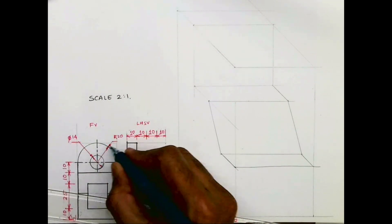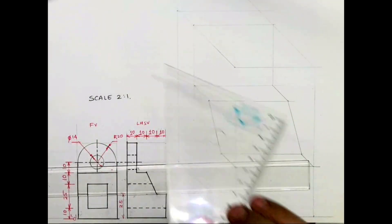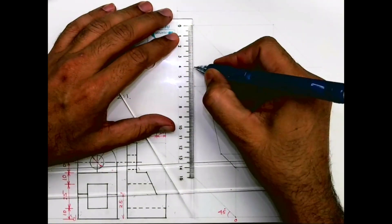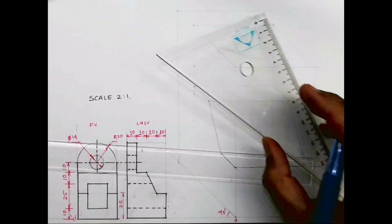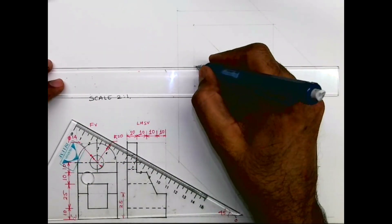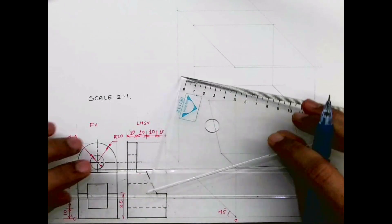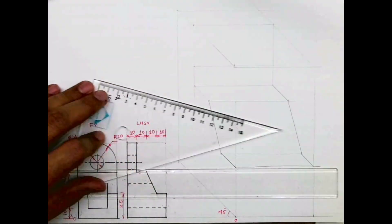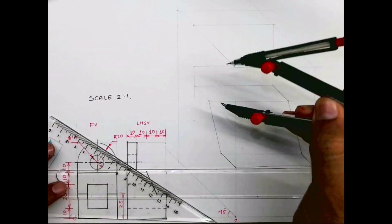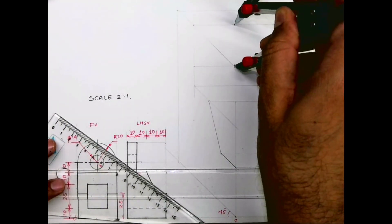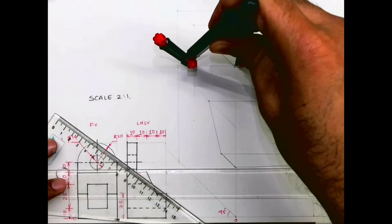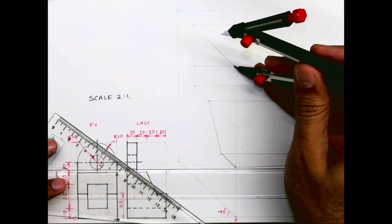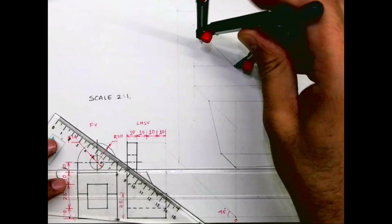After that, if you see this radius, radius is 20 so we'll take 40. So we'll go down by 40 from this left-hand side top corner and we'll go inside by 40. So you take radius 40 and you draw the curve.